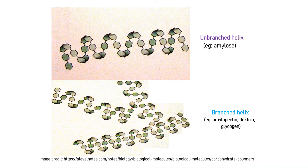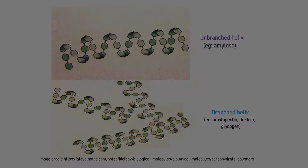Starch can be separated into two fractions: the linear chain amylose and the branched chain amylopectin. Natural starches are mixtures of amylose and amylopectin. Amylose forms a colloidal dispersion in hot water, whereas amylopectin is completely insoluble.